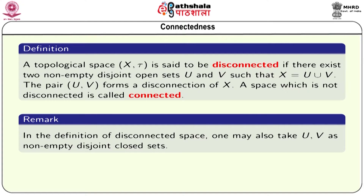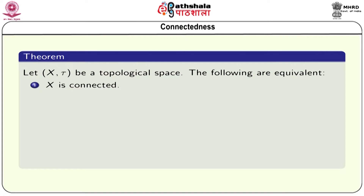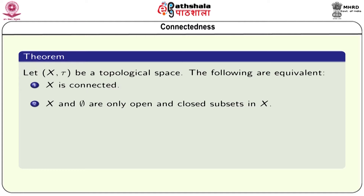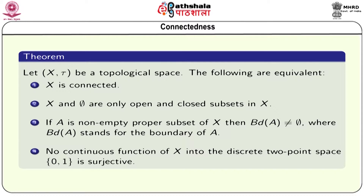In the definition of a disconnected space, one may also take U and V as non-empty disjoint closed sets. We state a theorem that characterizes connectedness of topological spaces. Suppose X tau is a topological space; then the following statements are equivalent: X is connected; X and the empty set are the only open-and-closed subsets in X; if A is a non-empty proper subset of X, then the boundary of A is non-empty; and no continuous function from X into the discrete two-point space is surjective.